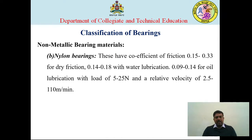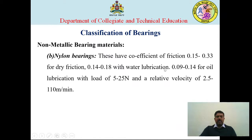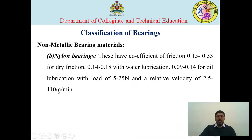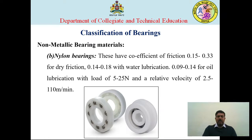The second type is nylon, which is a thermoplastic material. The typical coefficient of friction for nylon is in the range of 0.15 to 0.33 for dry friction without lubrication. With water lubrication, a lower value is expected; with oil lubrication, the coefficient of friction reduces to 0.09 to 0.14. The load range is between 5 to 25 newtons, applied at a velocity of 2.5 to 110 metres per minute. Nylon bearings are used for low load applications.